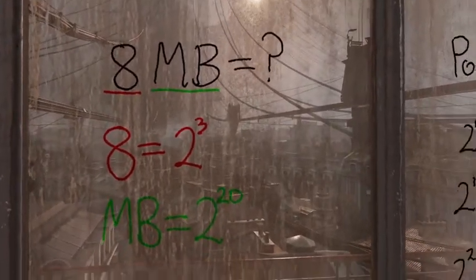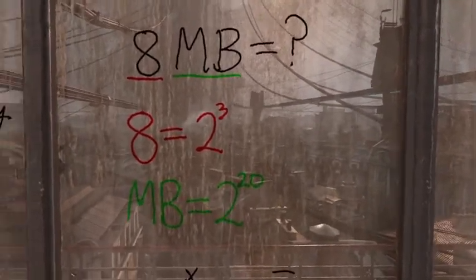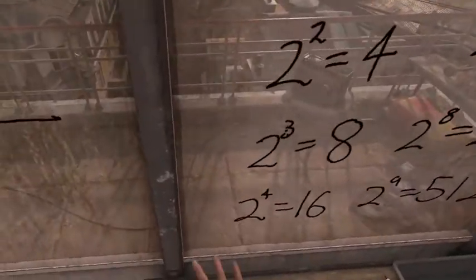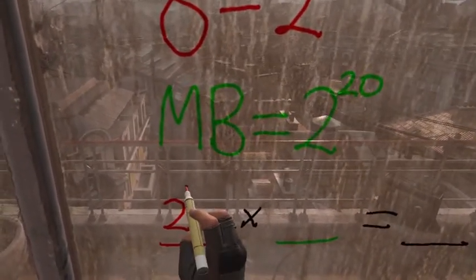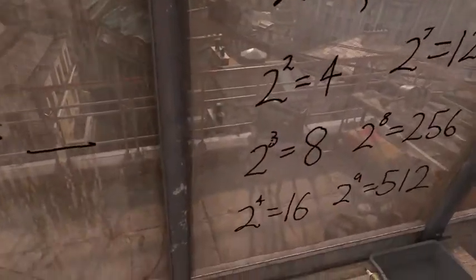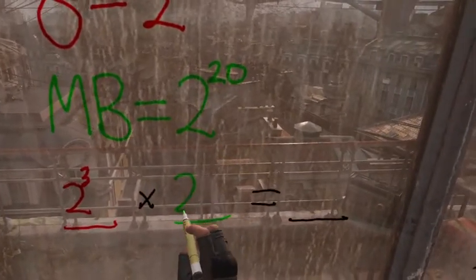Great. Now that you have your two powers of 2, the last thing you need to do is just multiply them together. And so we'll do that right here. We're going to take 2 to the power of 3 and we're going to take 2 to the power of 20.